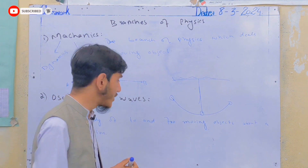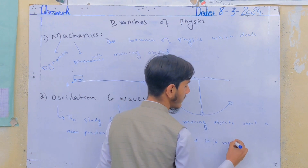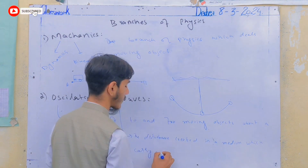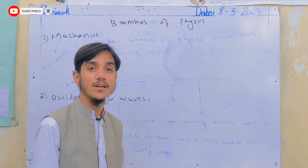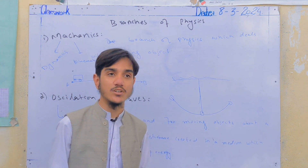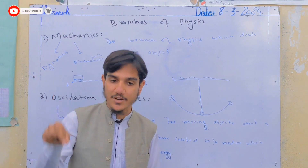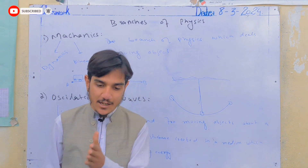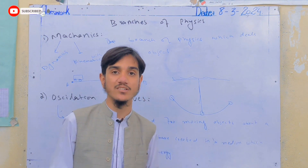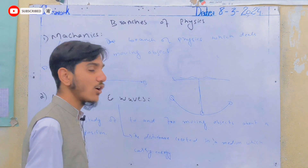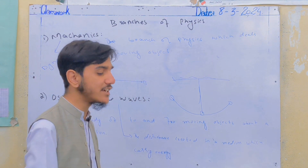Waves are the disturbance created in a medium which carries energy. For example, if you look at a tub of water and create a disturbance on the surface, you can see waves propagating. Waves act as energy carriers through the medium.